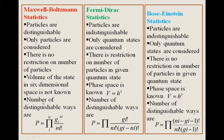In MB statistics, the number of distinguishable ways is W = ∏ gᵢⁿⁱ / nᵢ!. In Fermi-Dirac statistics, it is W = ∏ gᵢ! / (nᵢ! × (gᵢ − nᵢ)!). For Bose-Einstein statistics, the number of distinguishable ways is W = ∏ (nᵢ + gᵢ − 1)! / (nᵢ! × (gᵢ − 1)!).